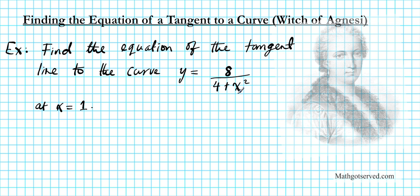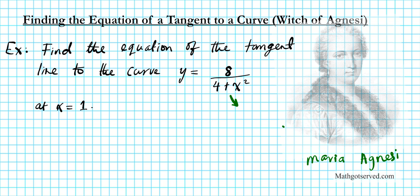This curve is due to Maria Agnesi, one of the prominent mathematicians of the 18th century. She was Italian and contributed greatly to the development of differential and integral calculus. This curve has an interesting name — it's known as the Witch of Agnesi. The 'witch' component of the name is due to a mistranslation.